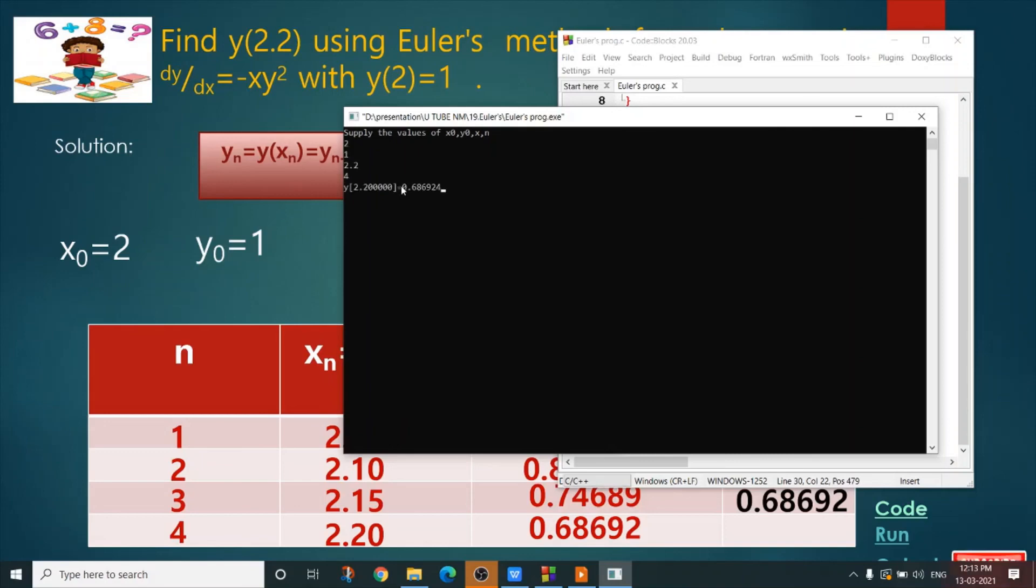After calculation I get the result y(2.2) equals to 0.686924.